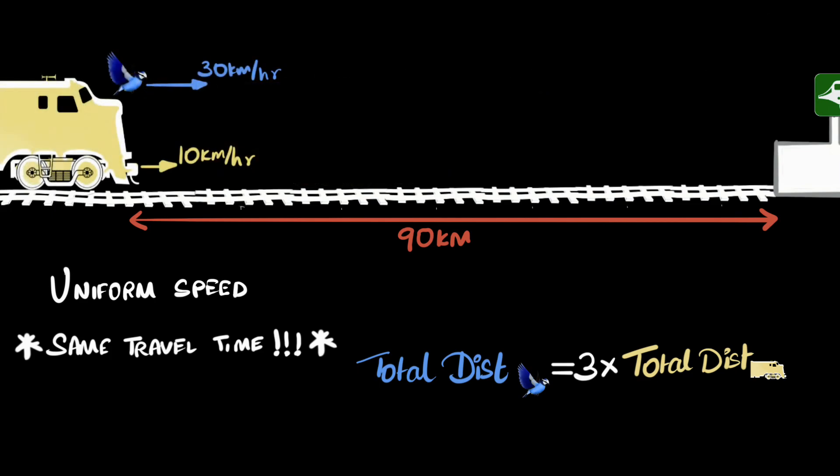So do we know what is the distance traveled by the train in this journey? Yes, we do. The train is at 90 kilometers far away from the station. Therefore, the train travels 90 kilometers by the time it reaches the station. And therefore, the bird must travel thrice that distance, that is 270 kilometers. Isn't that wonderful?